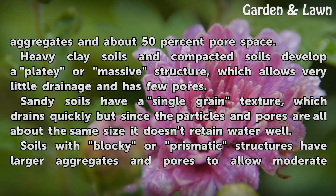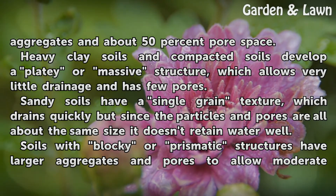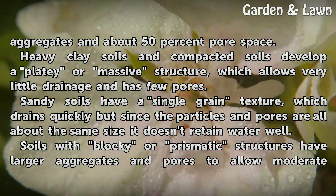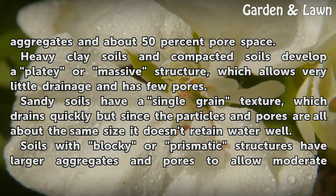Good garden soil typically has a granular structure with several sizes of particles and aggregates and about 50 percent pore space. Heavy clay soils and compacted soils develop a platy or massive structure, which allows very little drainage and has few pores.